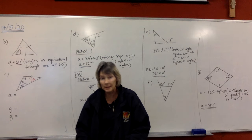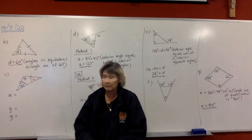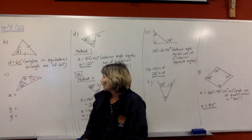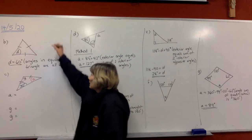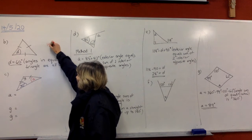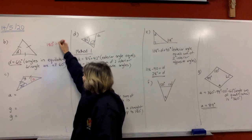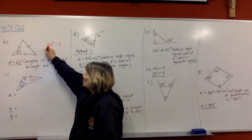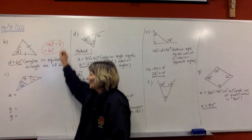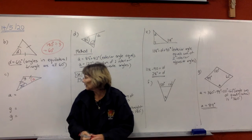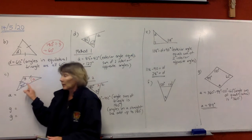For those of you who've forgotten why that would be 60: just remember it's 180 degrees for the angles in a triangle, divide by three equal angles, which gives you 60 degrees.